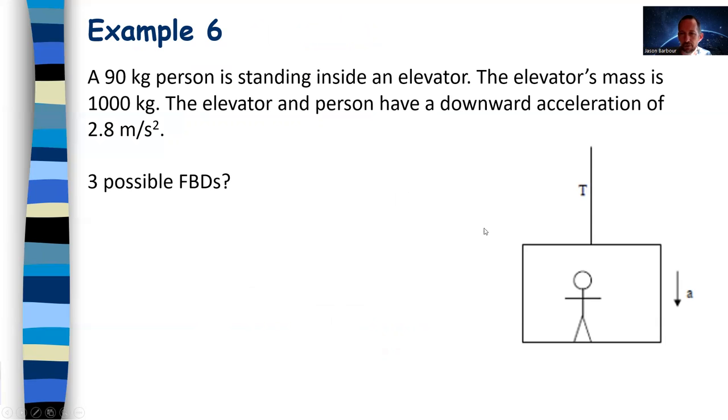Here's an example. This one's also from your note packet and there's a video about this, so I don't need to go into detail and do the whole thing. We've got this person inside an elevator. What three free body diagrams could we draw for this situation? Well, we could draw a free body diagram for the man, we could draw a free body diagram for the elevator, or we could draw a free body diagram for the man and elevator together as one system. And like I said, there's a video in your note packet that goes through those.